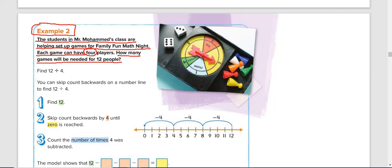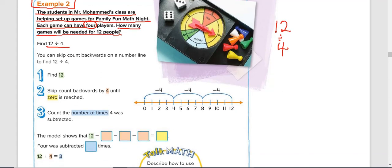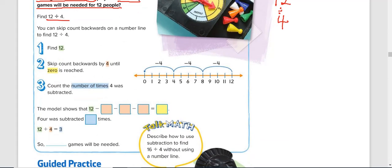So we have a total of 12, and each game we have 4 players. We don't know the number of games, but each game has 4 players. So what we can do is to do 12 divided by 4. Okay, so if you follow the initial example, the steps, it says keep subtracting 4 from this 12.